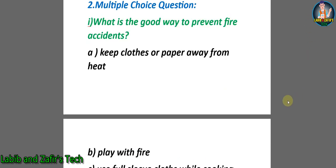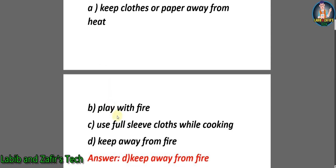Now students, let's go through some multiple choice questions. Number one: What is the good way to prevent fire accidents? A) Keep clothes or paper away from heat. B) Play with fire. C) Use loose clothes while cooking. D) Keep away from fire. The correct answer is D: Keep away from fire.